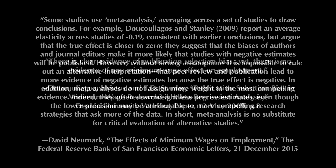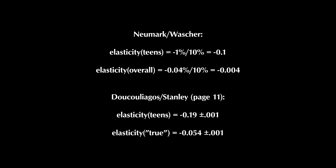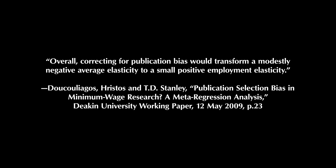And yet the authors claim on page 8: there is clear evidence of publication selection bias, yet there is no evidence of any minimum wage effect on employment. Yes, because they explained it all away with publication bias! And yet, even after their correction, they could only get it up to negative 0.054. The authors displayed unbelievable chutzpah for writing in their conclusion on page 23: 'correcting for publication bias would transform a modestly negative average elasticity to a small positive employment elasticity.' Except it didn't, did it? You can only get it up to negative 0.054, which is NOT positive. Positive numbers aren't even within the margin of error — not even zero is. In fact, the absolute lowest the disemployment effect could be according to this margin of error is negative 0.053. Are you all beginning to understand now why so many of us laugh at minimum wage proponents?